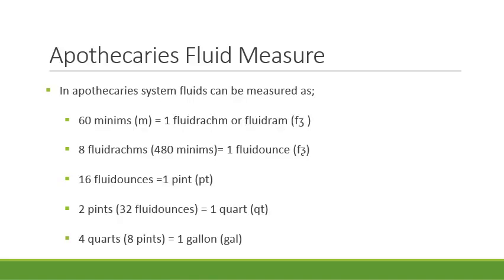In the apothecary system, the smallest unit for the measurement of fluids or liquids is the minim, and 60 minims make up a fluid dram, while 8 fluid drams make up 1 fluid ounce. 16 fluid ounces make 1 pint, 2 pints make 1 quart, and 4 quarts make 1 gallon.